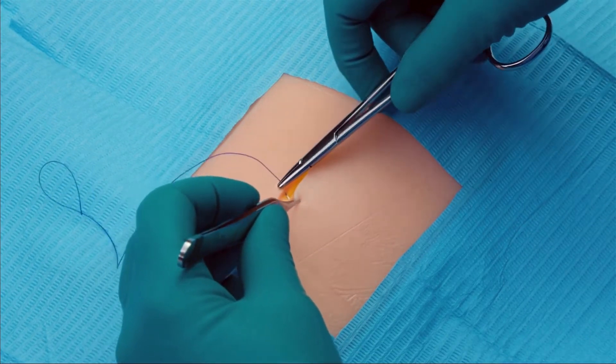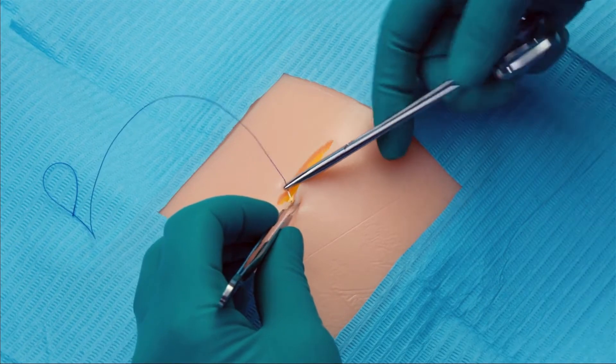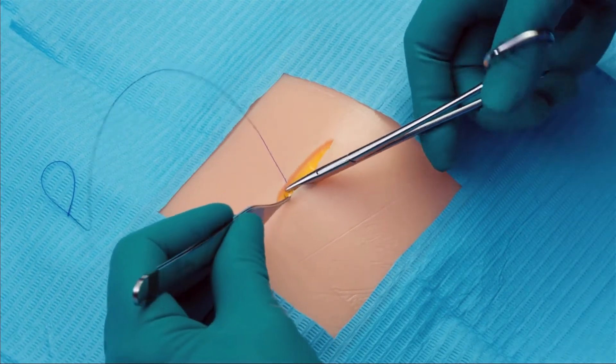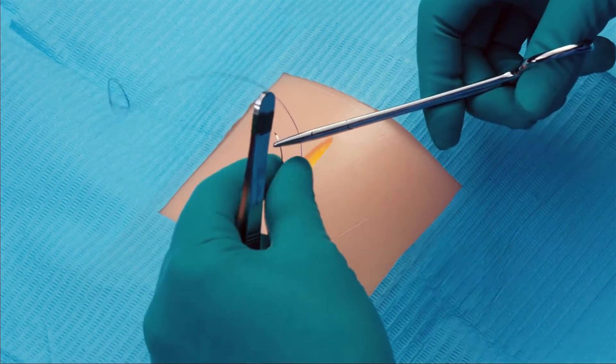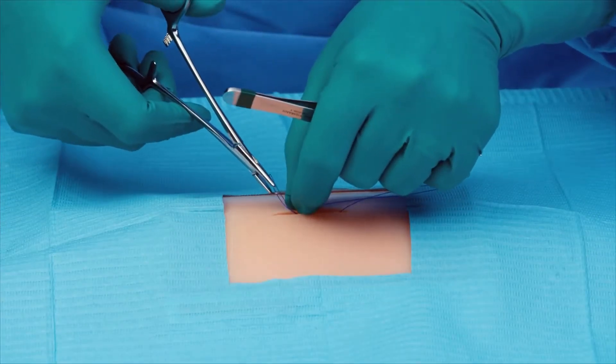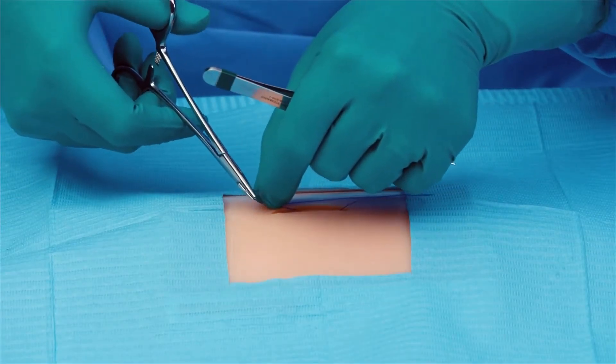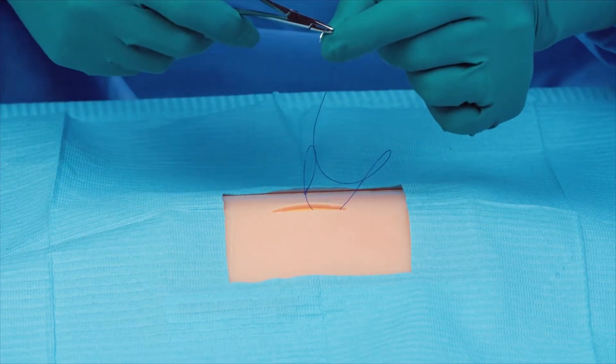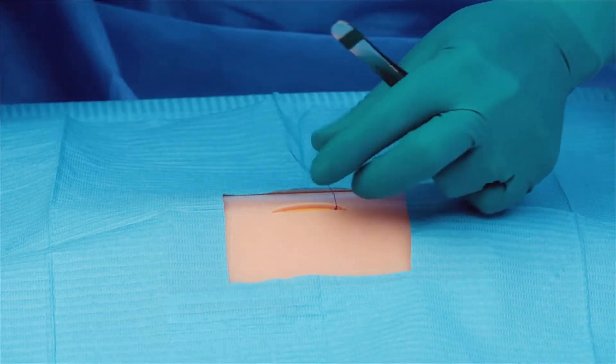We begin by taking a bite of the designated anchoring tissue medial to the apex of the excision. Pass the needle through the variable loop and pull in order to tighten the loop and create the fixation point.